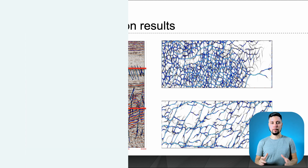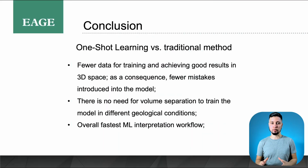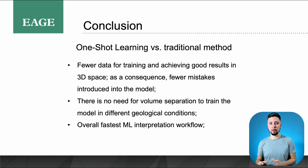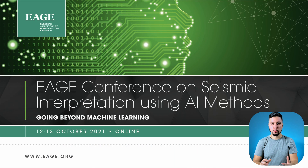Here is how the network predicts in 3D space — we can see a very consistent picture. To sum up: one-shot learning requires fewer slices of data to train the neural network, introducing less subjective knowledge into the system. When dealing with distinct geology and faulting systems, you don't need to separate volumes. It is a faster machine learning workflow that eliminates wasted hours for practitioners. We can always select the slices where we're most confident about the faulting and use those as training examples. Thank you everyone for listening — I'll be happy to reply to your questions in the Q&A session.